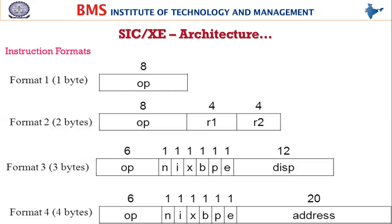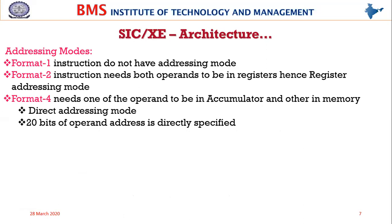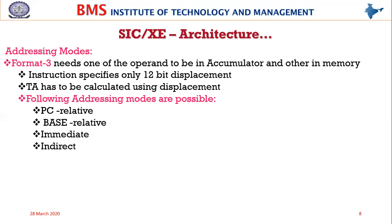Format four is direct addressing, having six bits of opcode, six bits flag, and a 20-bit complete address. The flag will be one if it is a format four instruction and zero if it is a format three instruction. Format one has no addressing mode, format two is register-to-register, format four is direct addressing, and format three gives rise to PC-relative, base-relative, immediate, and indirect addressing modes.